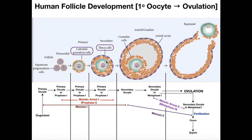I was looking online for a good image correlating folliculogenesis and oogenesis but had to make do, so I went ahead and created one. Up top, all of this is folliculogenesis. Down here is oogenesis, and I'm going to explain it with the different meiosis stages and everything.